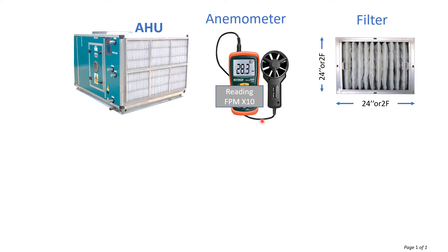Generally we take the reading on the AHU suction section, or you can say it is on the filter side. First, you set the anemometer to FPM mode. FPM is feet per minute mode, and then start taking readings on each filter.